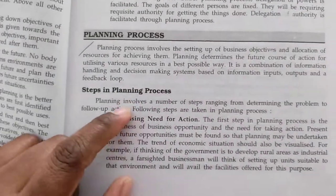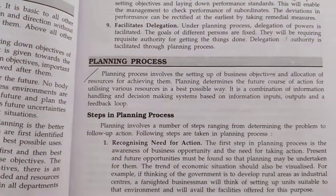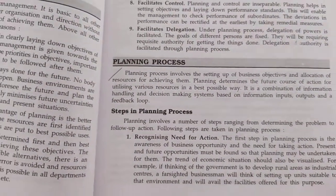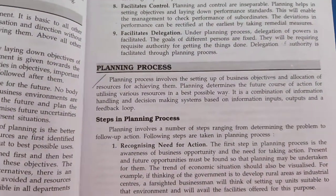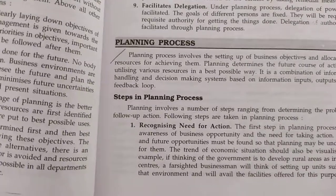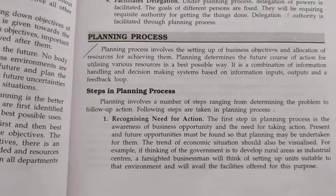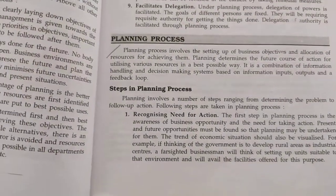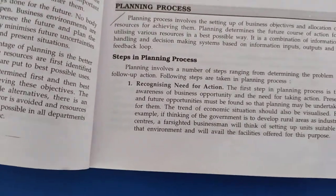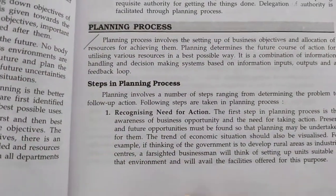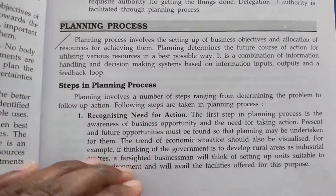The planning we are making is nothing but regarding the objective — to reach our goal. In that plan, we will be having a process: first what we have to do, after that what we have to do. So, planning should be according to that process. Steps in planning process.